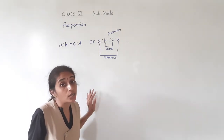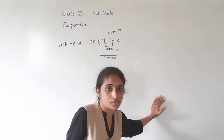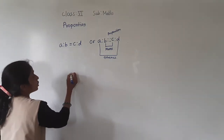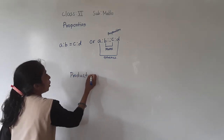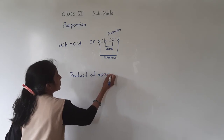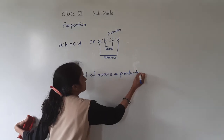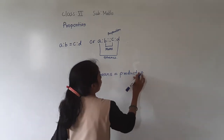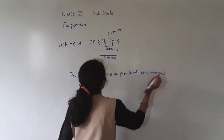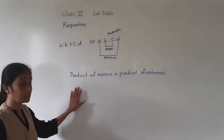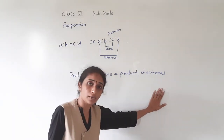So for any proportion, product of means is equal to product of extremes.